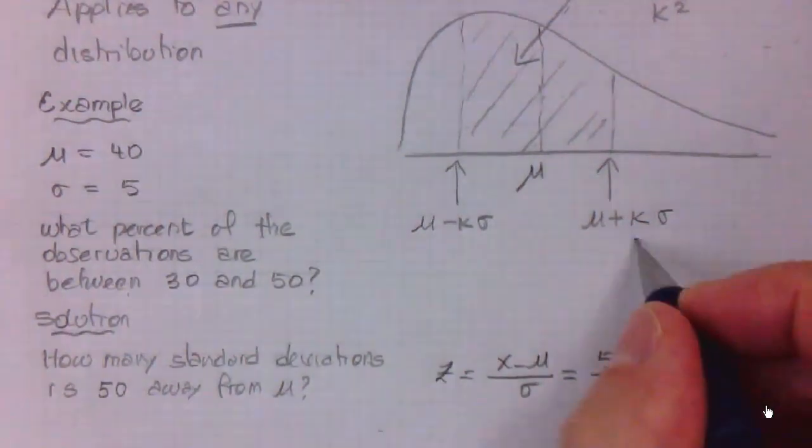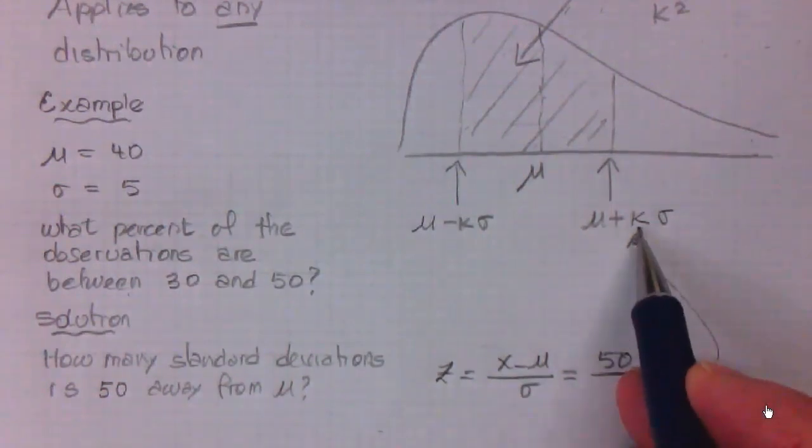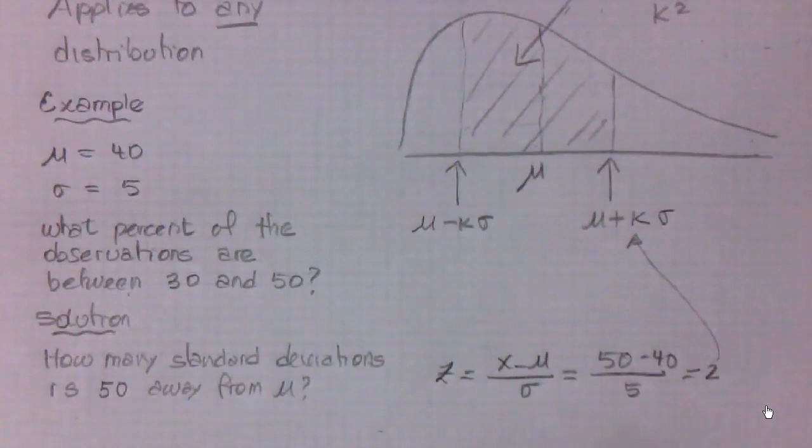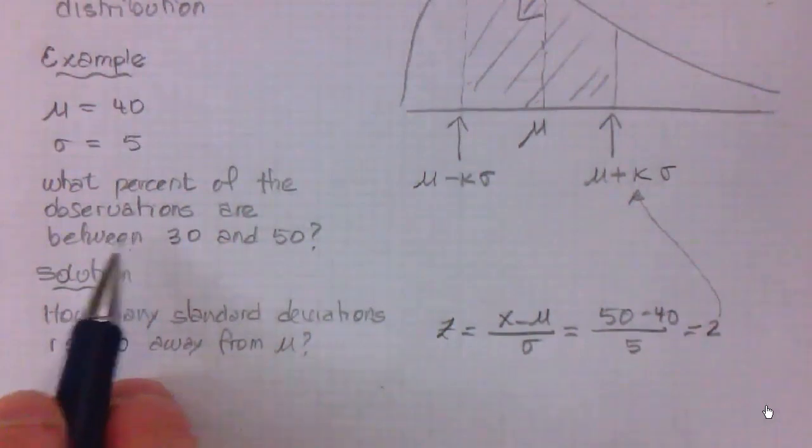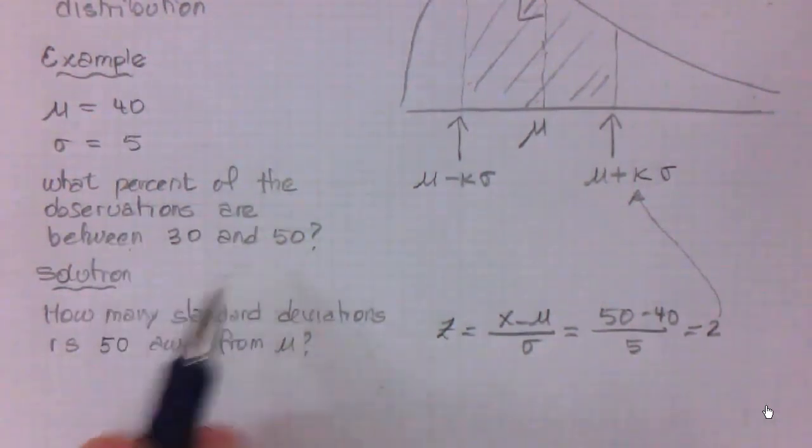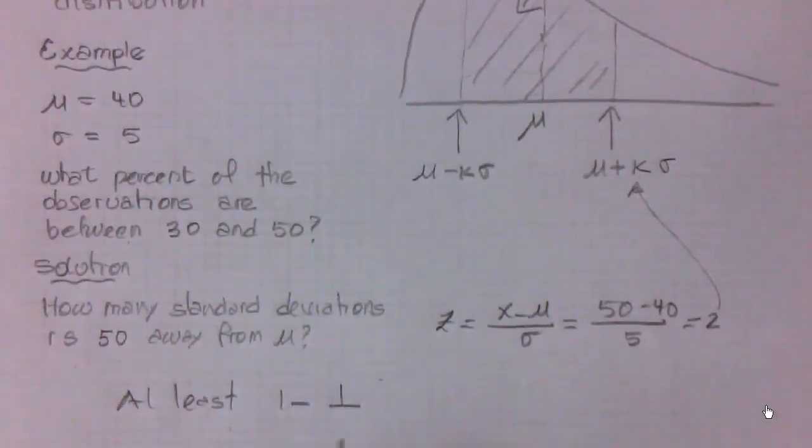That is the number k that Chebyshev's rule is talking about. k is the number of standard deviations up and down from the mean. Once we find k, the answer to our original question - what percent of the observations are between 30 and 50